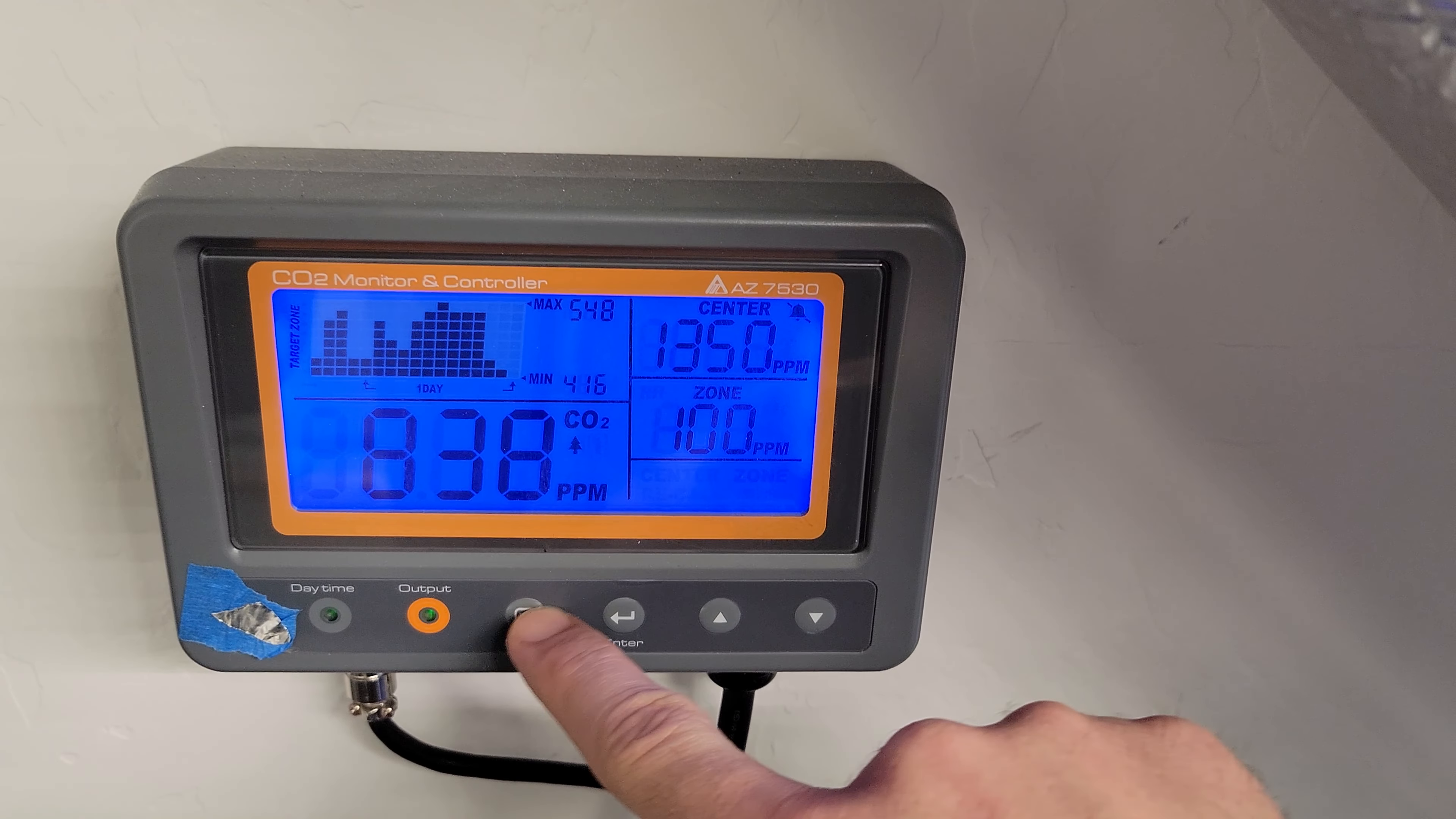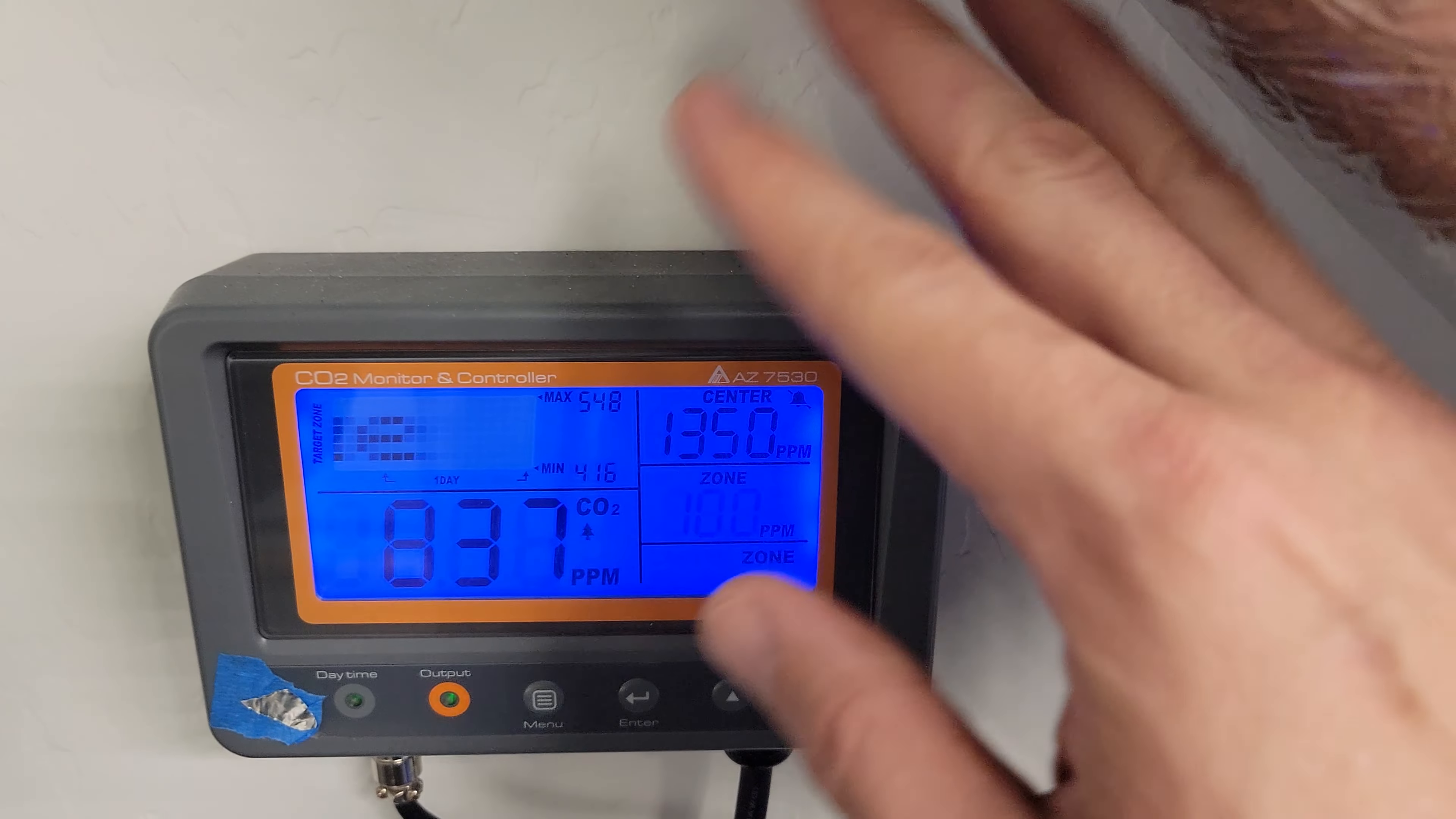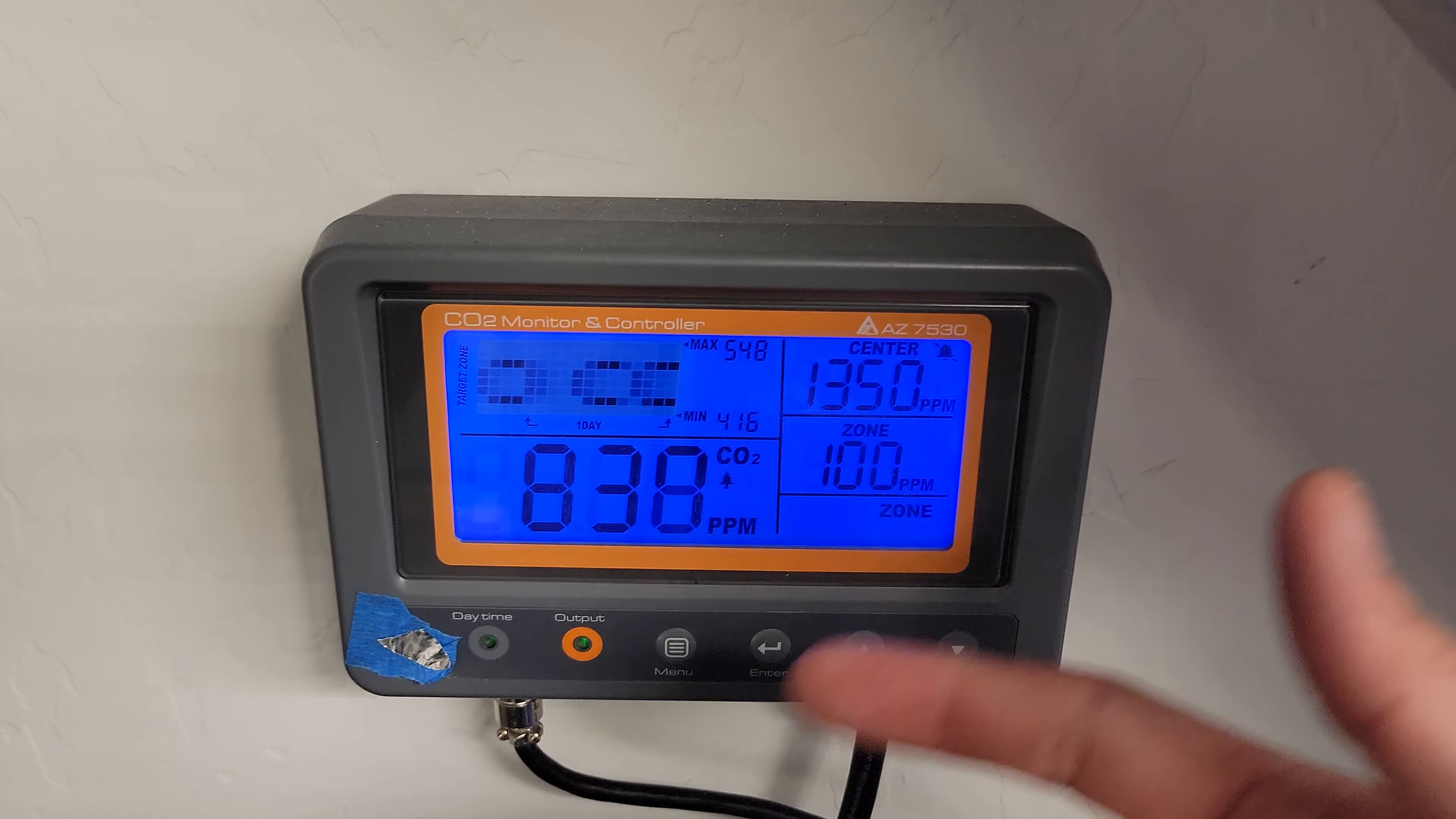For this model, the zone lets you know how much it'll go above and below. When I have 100 zone for 1350, it'll go to 1450 and then it'll turn off, but it'll let it get down to 1250 and then kick back on. So that's my zone. I did have a larger zone, but as I got higher, I got the zone smaller.